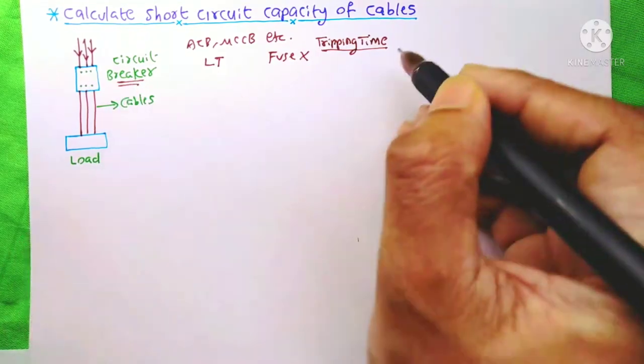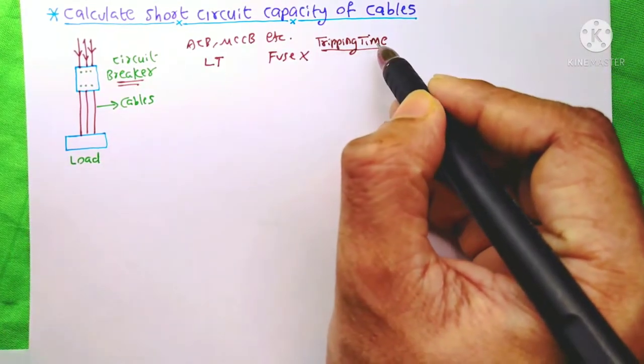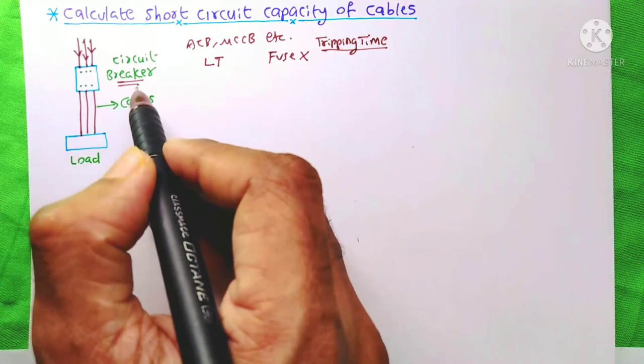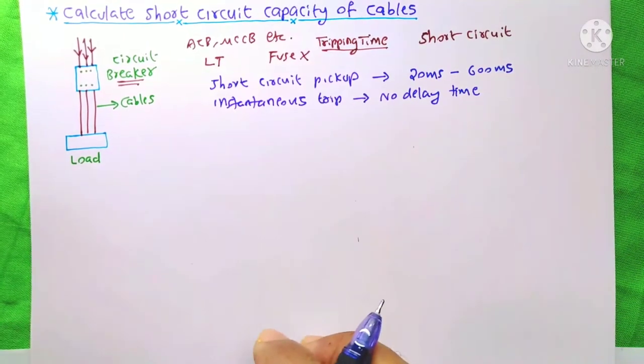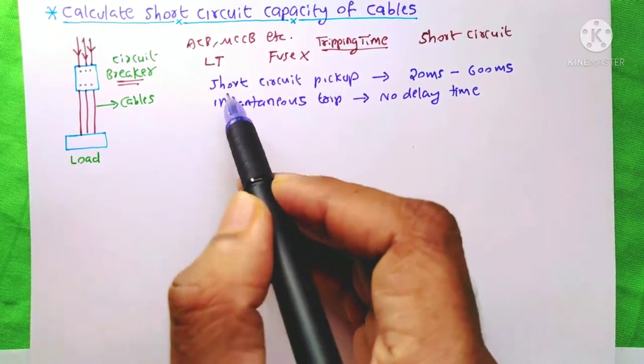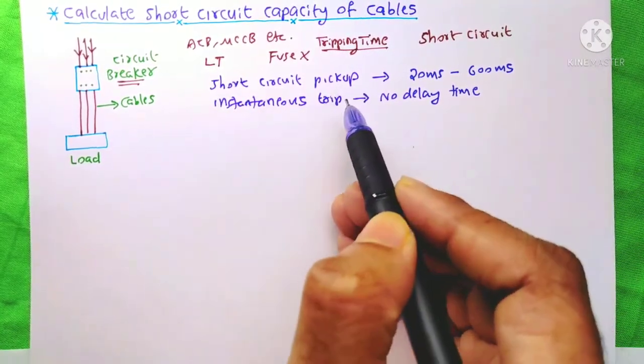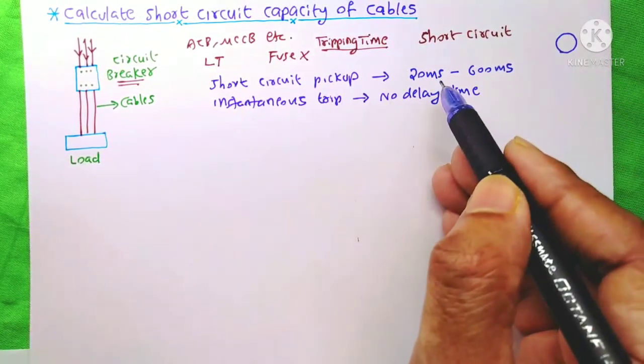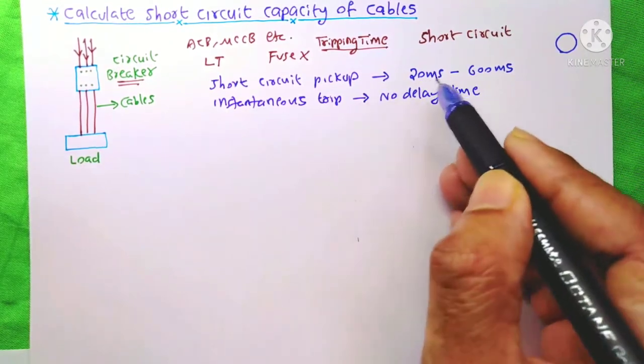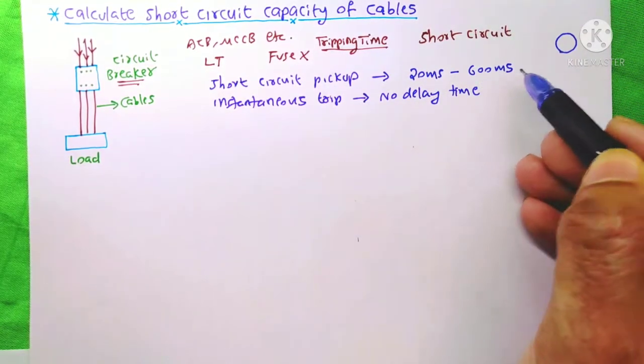Because for this calculation, short circuit tripping time of the circuit breaker is needed. On air circuit breakers and also in MCCBs, we can see the short circuit pickup setting. The tripping time is generally between 20 ms and 600 ms.